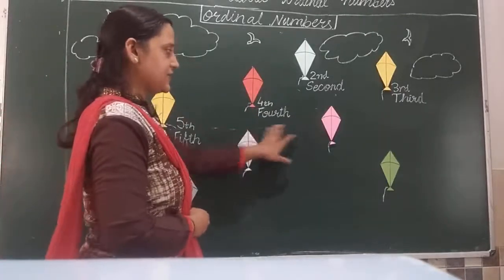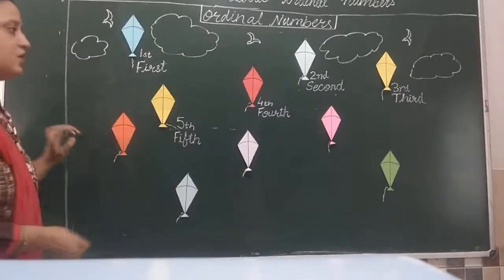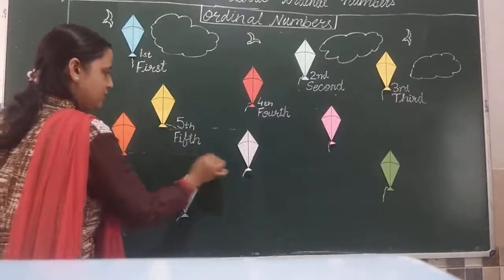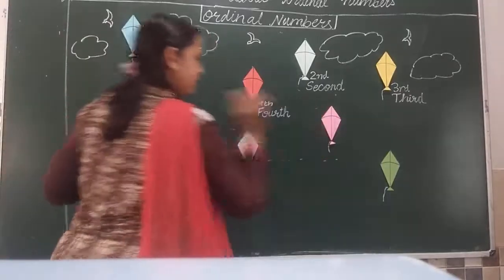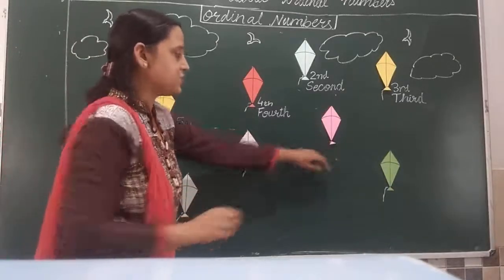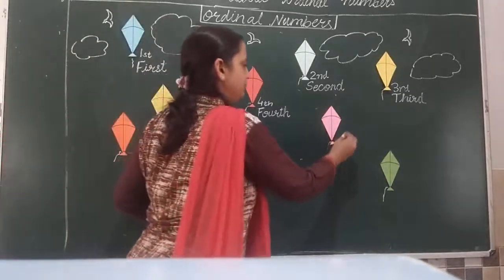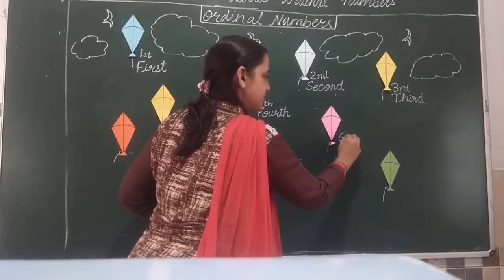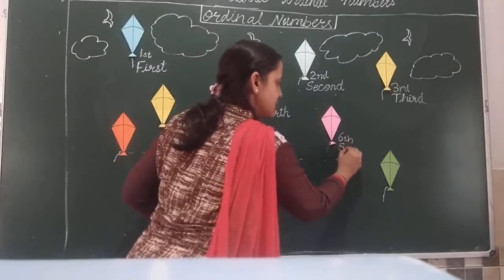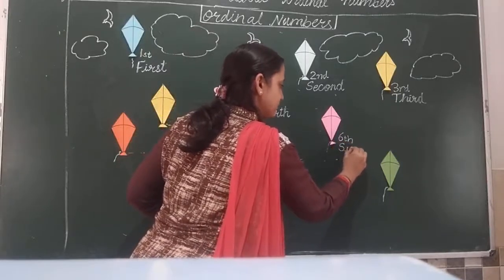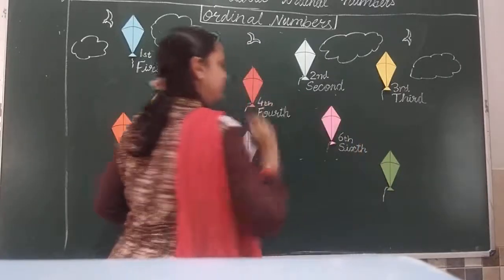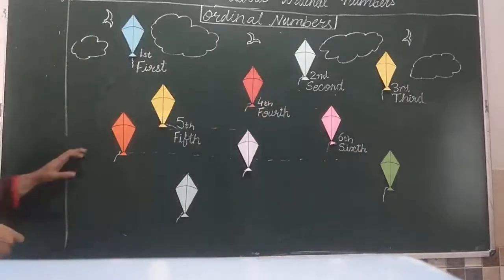The orange kite is at the sixth position. You can check the positions. Yes, this kite is at the sixth position. So we write: 6 with 'th'. S-I-X-T-H. Sixth. Now next kite.